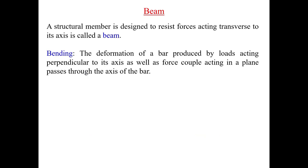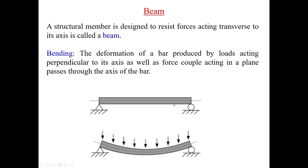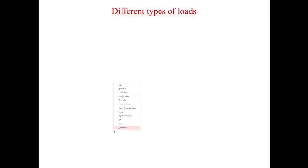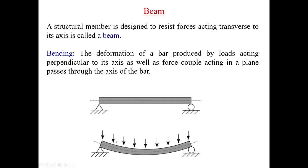Beams are structural members which carry the transverse load. Whenever transverse loads are applied to a structure, that structural member is called a beam. When the transverse load is applied, the beams tend to deform about the lateral axis — they try to bend. This deformation produced by transverse loads or due to couples is called bending. Generally bending happens such that an undeformed beam, when the transverse load is applied, deforms into a curved shape. This is the deformed shape of a beam under the effect of transverse load.